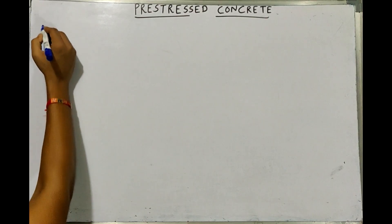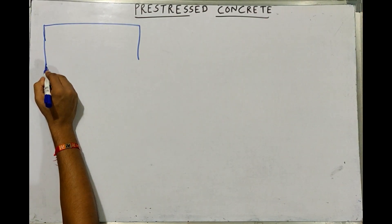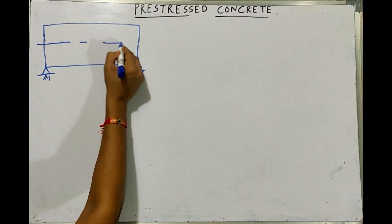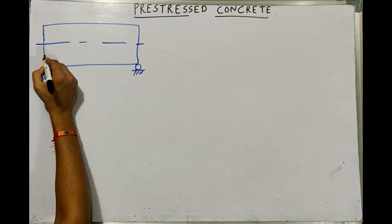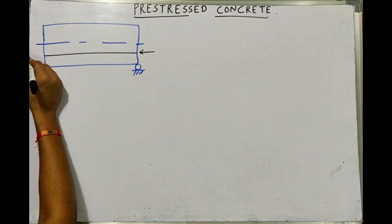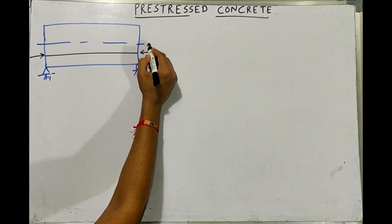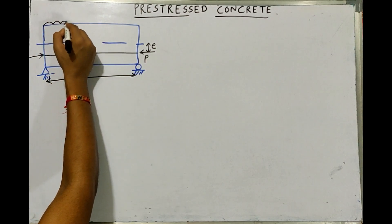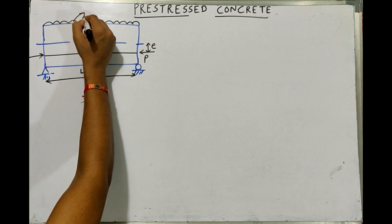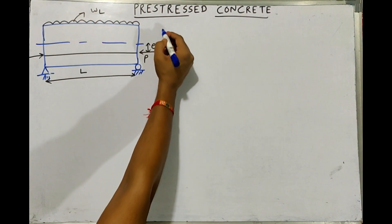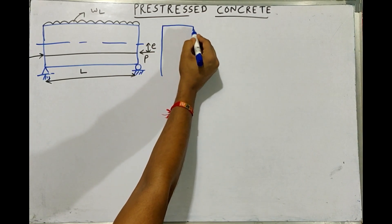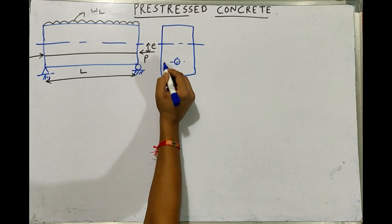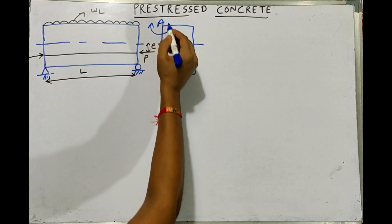To start with, assume a pre-stressed concrete beam like this. The beam is simply supported at both ends, and this is the neutral axis of the beam. The beam has tendons carrying a pre-stressing force P at an eccentricity of E from the neutral axis. Let the span of the beam be L and let it carry a live load of intensity WL. The cross section of the beam is rectangular with cross-sectional area A.